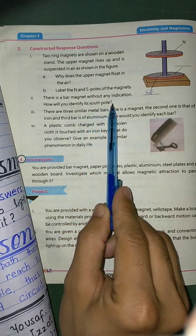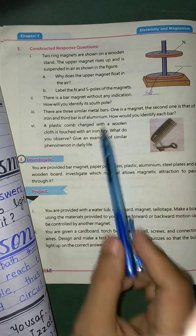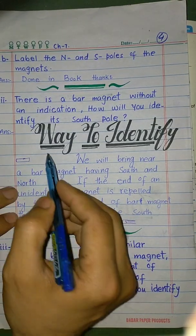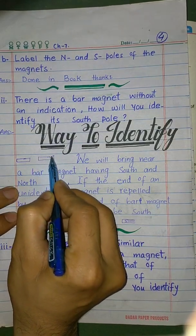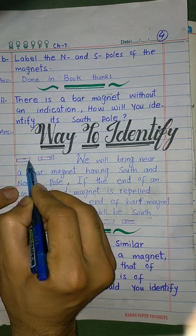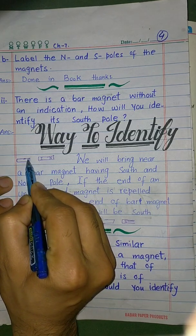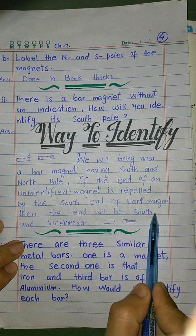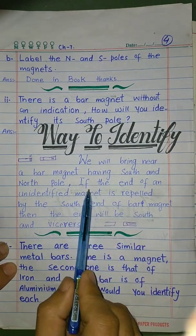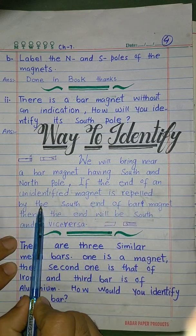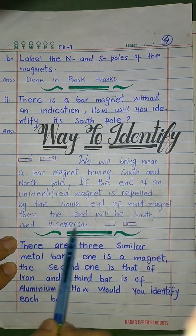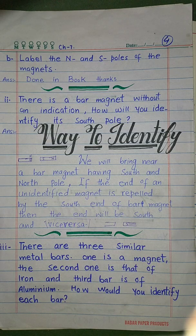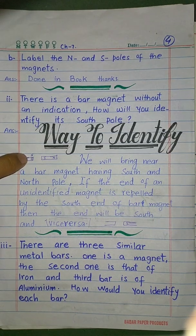There is a bar magnet without any indication — how will you identify its south pole? Using a known magnet marked N and S: if the end of the unidentified magnet is attracted by the south pole of the known magnet, that end is the north pole, and the opposite end will be the south pole.